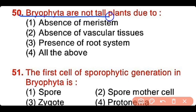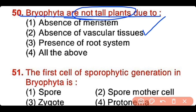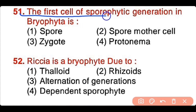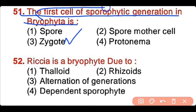Question number 50: Bryophytes are not tall plants due to absence of meristem, absence of vascular tissue, presence of root system, or all of the above. The correct answer is option 2 — due to absence of vascular tissue, bryophytes are not tall plants. Question number 51: The first cell of the sporophytic generation in bryophytes is spore, spore mother cell, zygote, or protonema. The correct answer is option 3. Zygote is the first cell of the sporophytic generation in bryophytes.